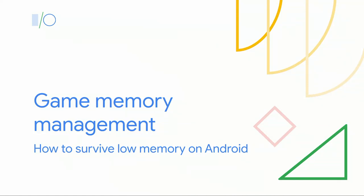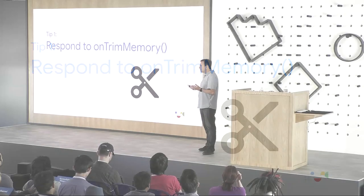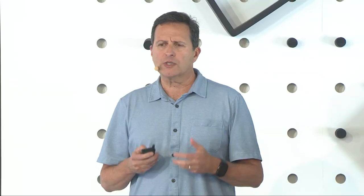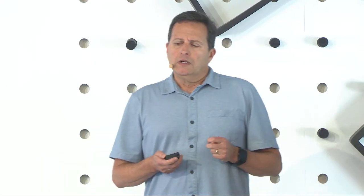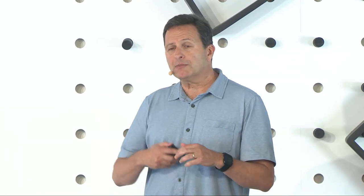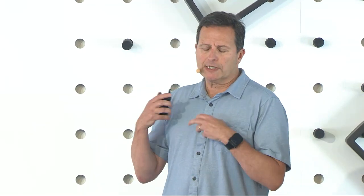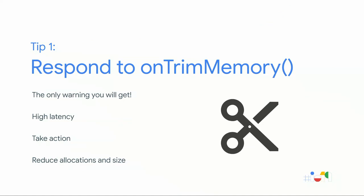What things should your game do to avoid low memory situations? First, respond to onTrimMemory. We feel this is now more reliable and provides reliable signals — it's probably the only warning you're going to get. Note that onTrimMemory still has high latency, so you could be in a critical situation before it notifies your game. When you do get it, take action: reduce allocations, slow down allocations, remove things from memory if possible, evict shaders, use lower-resolution textures, and similar steps.